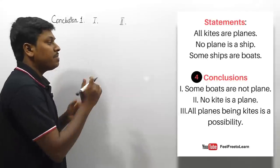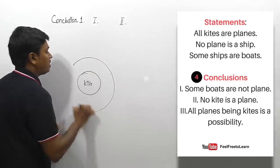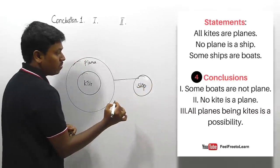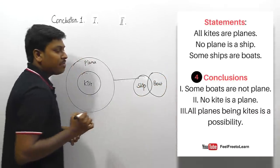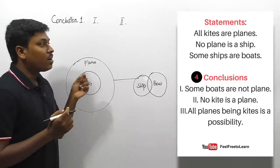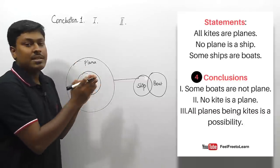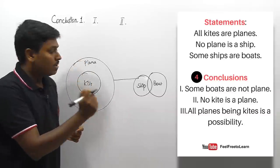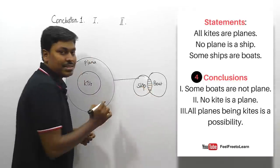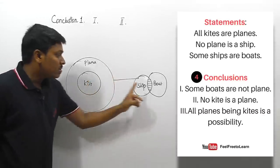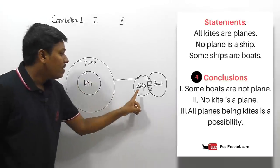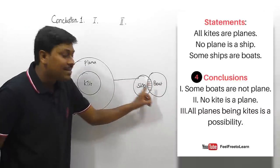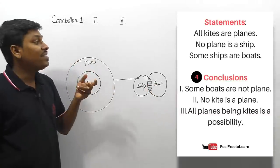Next question. Statements: 'all kites are planes,' 'no plane is a ship,' and 'some ships are boats.' Conclusion number one: 'some boats are not planes.' This is based on the 'some not' concept — read only the first two words: 'some boats.' Some boats will be this region, and they are saying this region is not a plane. We know there is no possible connection between ship and plane, so we can't connect this region to plane — some boats are not plane is exactly correct.